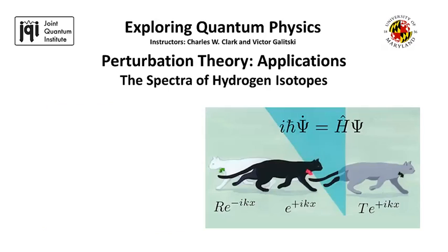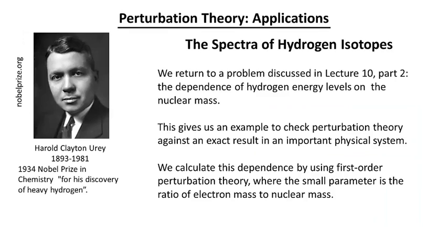We now return to a problem that we studied previously, the spectra of the isotopes of hydrogen. But we're going to approach it from the standpoint of perturbation theory rather than a direct solution of the Schrodinger equation. This is a fairly important problem in the history of science. It's a useful testing ground for perturbation theory because we do have available to us an exact solution so we can compare perturbation theory in the limit.